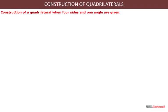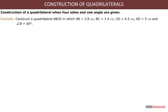Construction of a quadrilateral when four sides and one angle are given. Example: Construct a quadrilateral ABCD in which AB = 3.8 cm, BC = 3.4 cm, CD = 4.5 cm, AD = 5 cm, and angle B = 60 degrees.